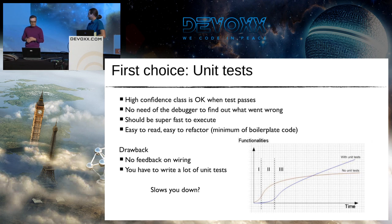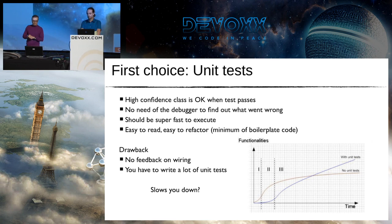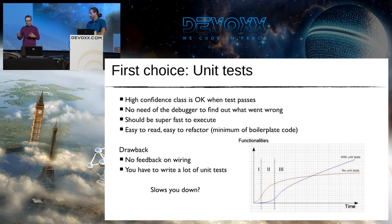Unit tests tend to be easy to read and easy to refactor. There are some drawbacks: we have no feedback on the wiring when all components are assembled, but that's what integration tests are for. Another drawback is we have to write a lot of unit tests — for every class, every method. Typically an application with ten thousand lines of code has ten thousand lines of unit test code. People often worry this will slow them down.